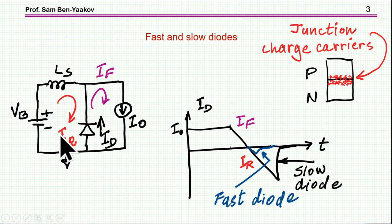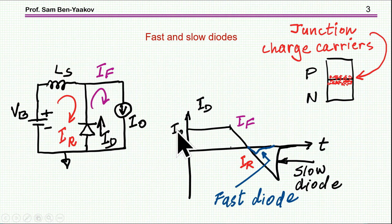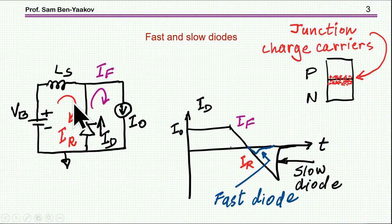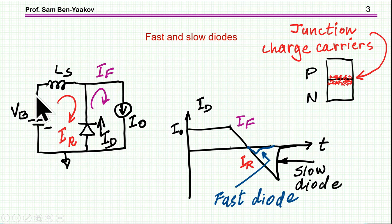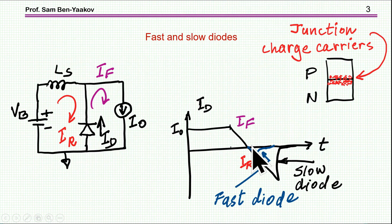Suppose this is the initial condition in which we have a forward current. This current builds up in the inductor and eventually it will start dropping the current of the diode. The rate will depend on the inductance, which in a real circuit actually represents stray inductances. Then the current goes down but it doesn't stop — even though there is a reverse voltage — but rather it goes to a negative value and then it will recover. This is the reverse recovery phenomenon, the reverse recovery current, the time it takes, and the peak value of the reverse recovery current.